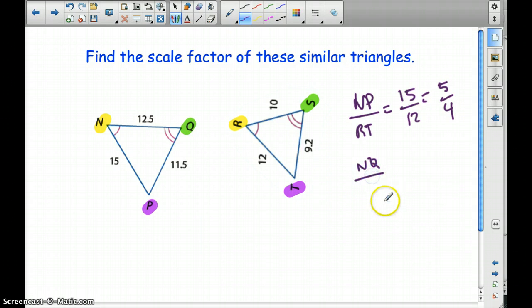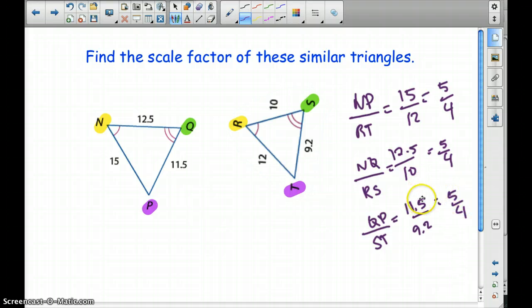So NQ over RS, 12.5. And a calculator is probably going to come in handy here. It's still going to be 5 to 4. And QP to ST is going to be 11.5 over 9.2. Again, 5 to 4. We're going to keep that scale factor in ratio form, in fraction form. Your scale factor is 5 to 4, because some of you might have done a calculator and might have had a decimal, but we're going to keep that as a fraction.